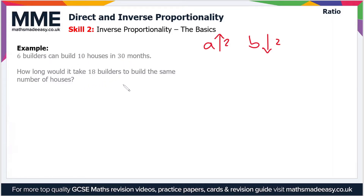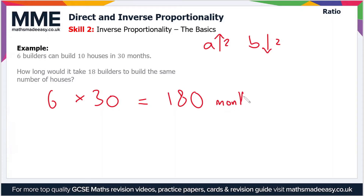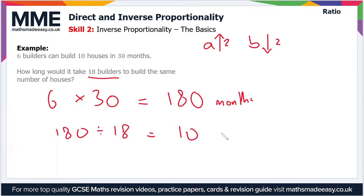For example, six builders can build 10 houses in 30 months. How long would it take 18 builders to build the same number of houses? First, we work out how long it would take one builder: with six builders taking 30 months, one builder would take six times as long — that's 180 months. This represents the total amount of working time. We then divide 180 by 18, which gives us 10. So it would take 10 months if there were 18 builders.